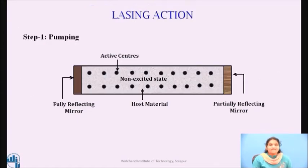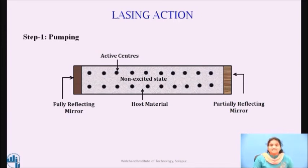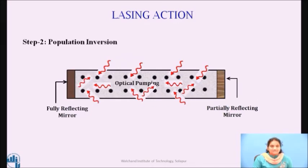After satisfying all these requirements for amplification of light, let us now see the resulting laser action. Step one is pumping: the active centers in the medium are in the ground state initially, as shown in the figure. By supplying energy from an external source, the atoms are excited from the ground level to an excited level. The lifetime of atoms in the excited state is extremely small. Therefore, the atoms drop spontaneously from the excited state to the metastable state. As the number of atoms at the metastable state exceeds that of the ground state, the medium goes into the state of population inversion, as we can see in the diagram.